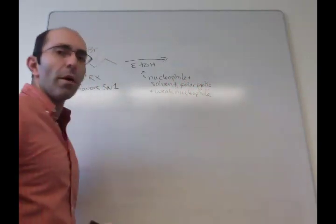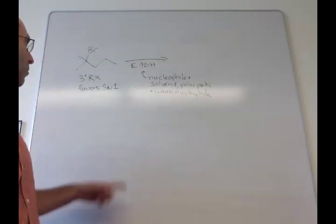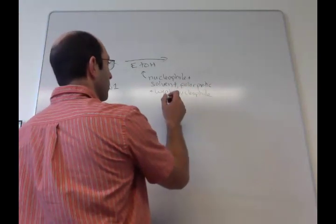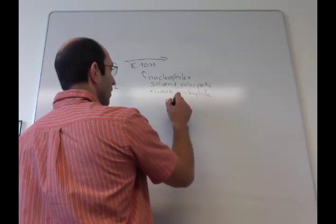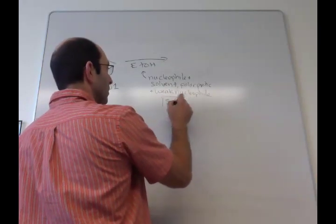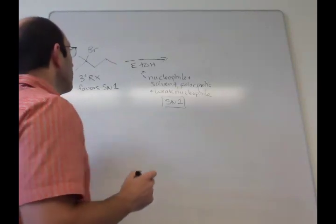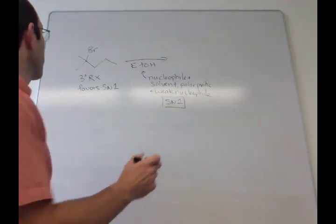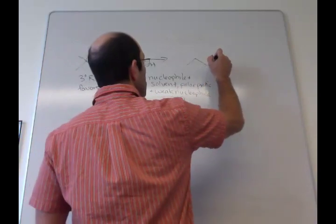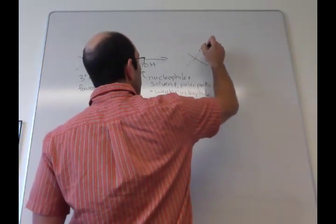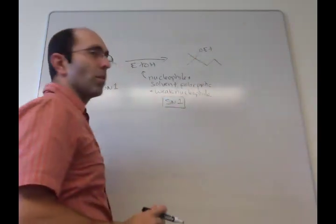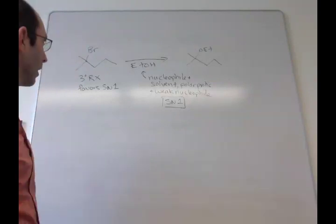It happens to be a polar protic solvent and a weak nucleophile. All right, so everything here is pointing to SN1. Tertiary favors SN1, polar protic and weak nucleophile, these things both favor SN1. So this has to be an SN1 reaction. Once we identify that, we could write out the mechanism. I'll let you write out the mechanism on your own. But just to be clear, the product we're going to get is that ether. And let's do one more.